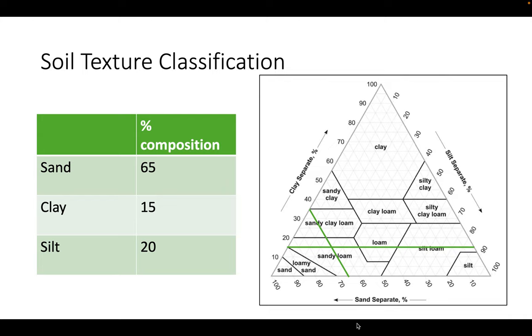Finally, we have the percent of silt, which is given to us as 20%. So find 20% on the right axis and plot the line across the triangle down and to the left.